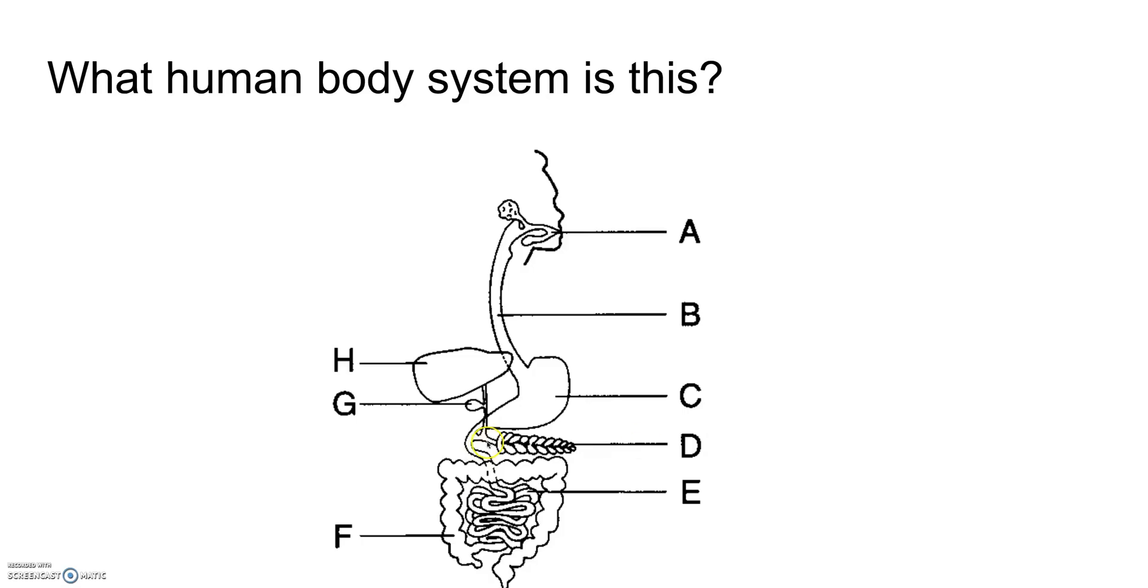Here we have the gallbladder, here we have the liver. The liver breaks down red blood cells, it also makes bile which helps digest fat. Bile is stored, stored in the gallbladder.